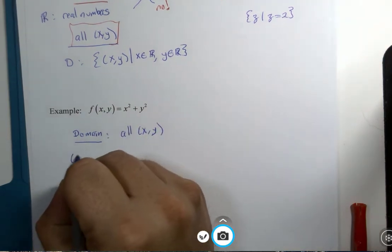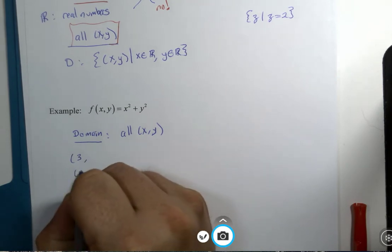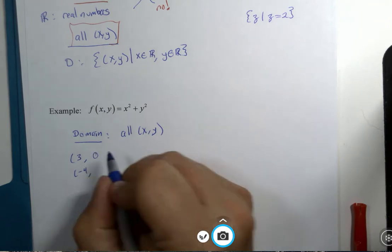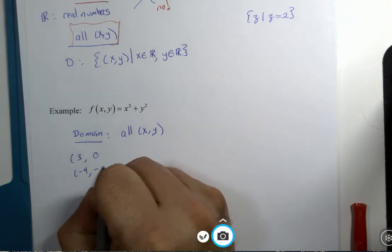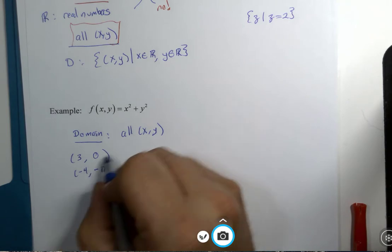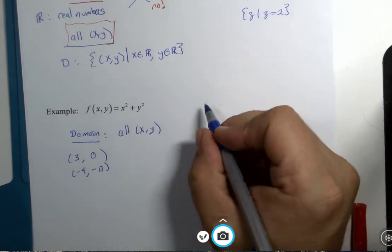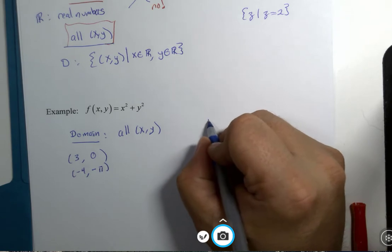We could have 3 comma something and negative 4 comma something. Y could be 0 and y could be negative pi. This is not a problem. You can use any x and y pairs that you want. So my follow-up question is, well what about the range?